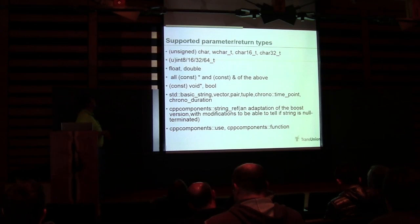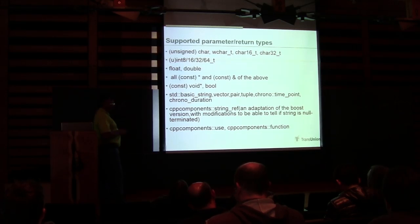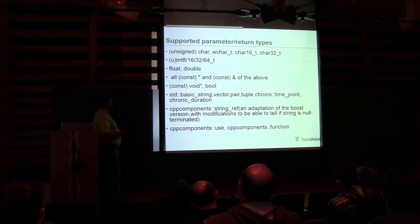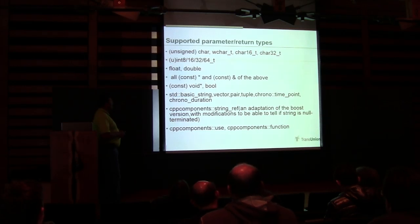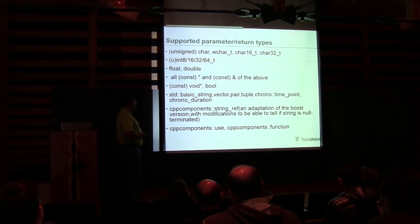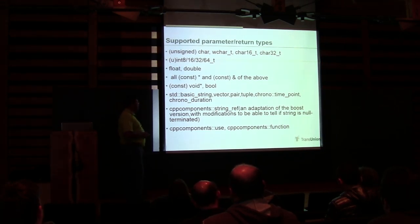Out of the box, what do we support for parameter and return types? You can pass in unsigned char, wchar, char16, char32; int8, 16, 32, 64; float, double; const pointers, constant pointers, and constant references of the above; void and bool; basic_string, vector, pair, tuple; chrono time points and chrono durations. And then for string_ref, you can pass in the C++ string_ref — basically the same thing as the Boost version with a couple of modifications.